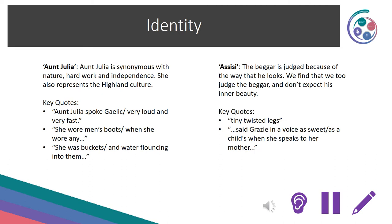The theme of identity: Aunt Julia is synonymous with nature, hard work and independence — she also represents the Highland culture. Key quotes include: 'Aunt Julia spoke Gaelic very loud and very fast', 'She wore men's boots when she wore any', and 'She was buckets and water flouncing into them.' In Assisi, the beggar is judged because of the way that he looks — we find that we too judge him and don't expect his inner beauty. Key quotes include: 'Tiny twisted legs' and 'said Grazie in a voice as sweet as a child's when she speaks to her mother.'